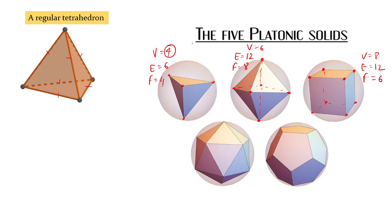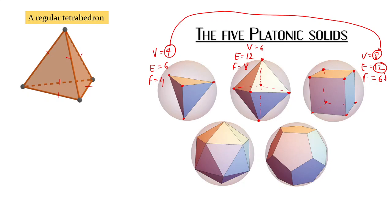We have four as the number of vertices in the regular tetrahedron, and double that is eight. We have the number 12 here, and six is appearing here as the number of faces of a cube.